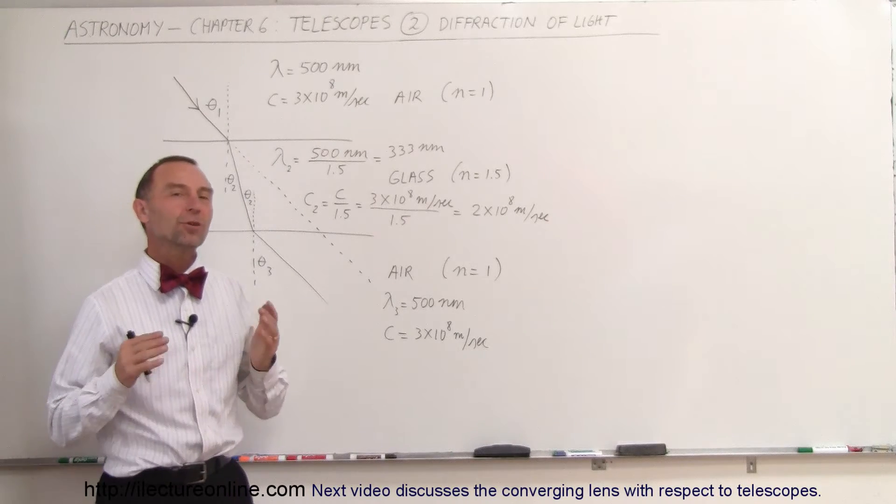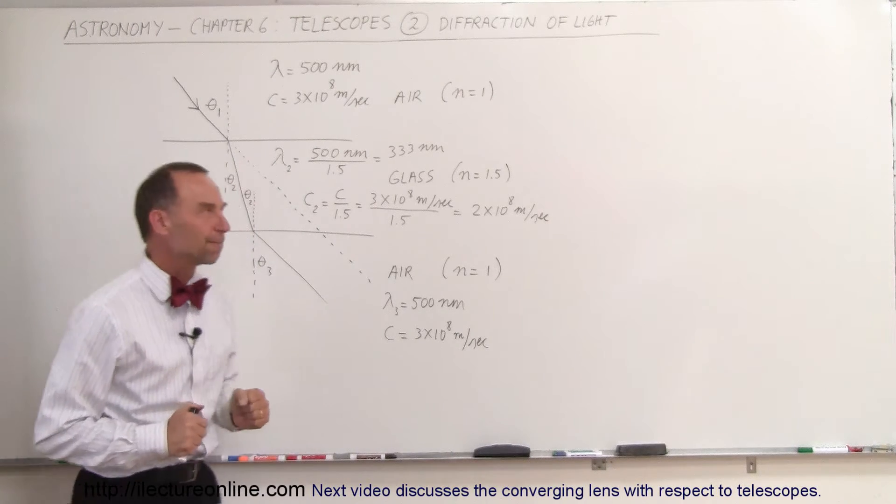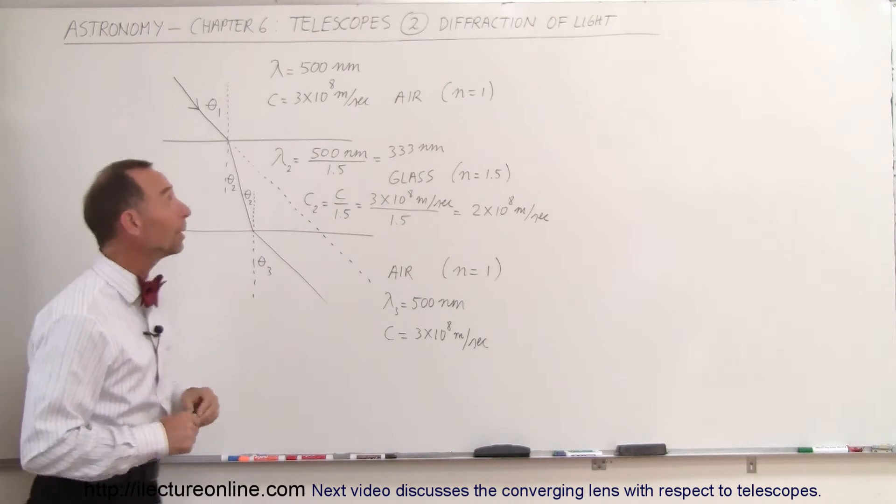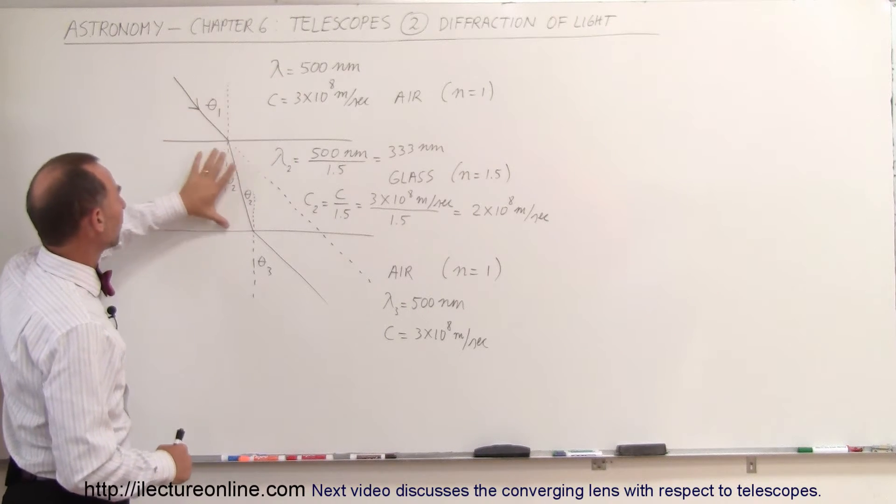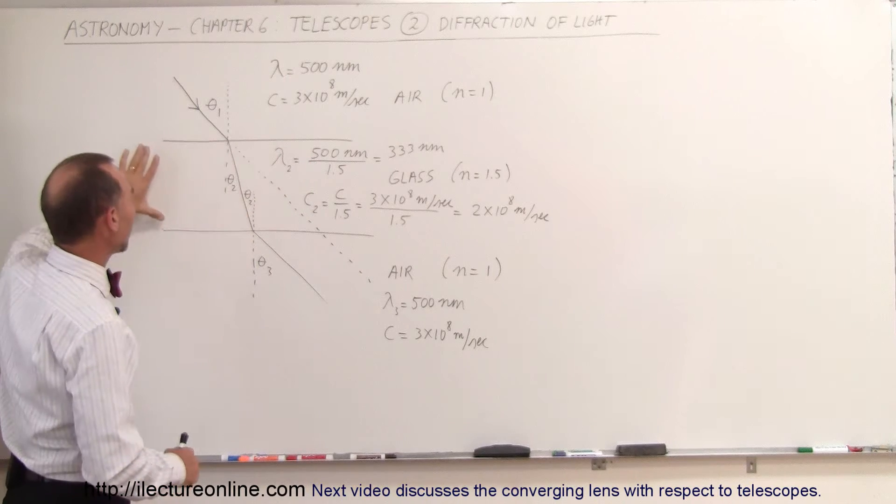Welcome to ElectronLine. Now we're going to talk about the diffraction of light. What is diffraction of light? Well, let's say we have a light beam that is incident on a plate of glass. So this is considered glass.